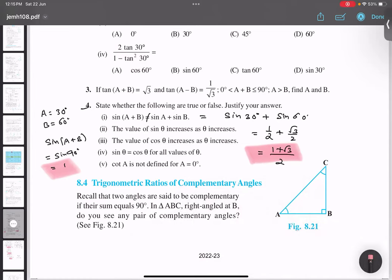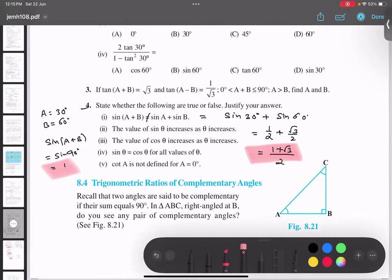So they are not equal, hence they are false. Is that thing clear? You can take a screenshot of this thing. Later on, you can copy it in your notebook. When you are done, just let me know.